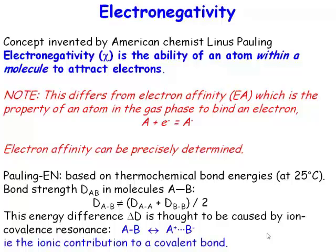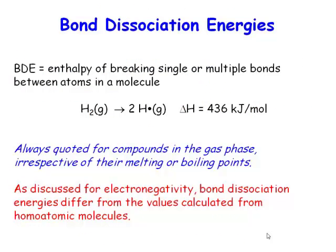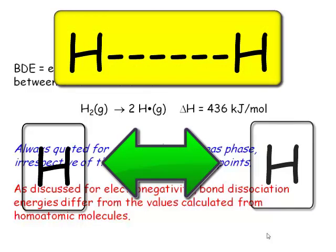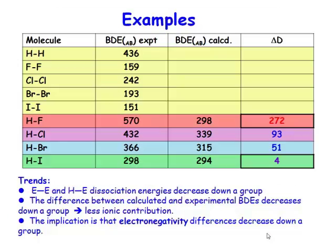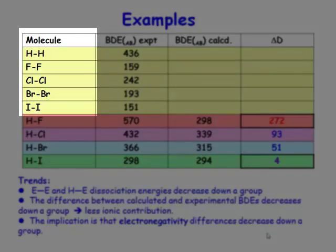If you have a molecule of dihydrogen, it has a bond dissociation energy associated with it. What exactly is meant by bond dissociation energy? It's the energy to take a molecule of something like hydrogen and break it into two discrete atoms. Here we have a whole series of homodiatomic molecules.